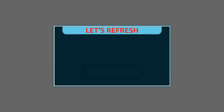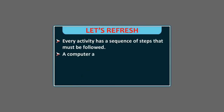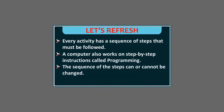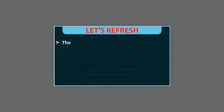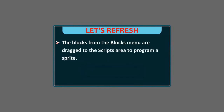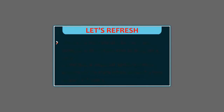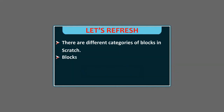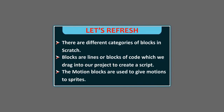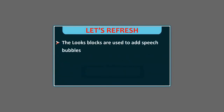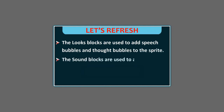Summary: Every activity has a sequence of steps that must be followed. A computer works on step-by-step instructions called programming; the sequence of steps can or cannot be changed. Scratch is animation software that lets us create animations, games, interactive stories, quizzes, etc. Scratch projects are made up of objects called sprites, and blocks from the block menu are dragged to the scripts area to program a sprite. By default, a single cat sprite is present when starting a new project. The motion blocks give motion to sprites, the looks blocks add speech and thought bubbles, and the sound blocks add sounds to an animation.